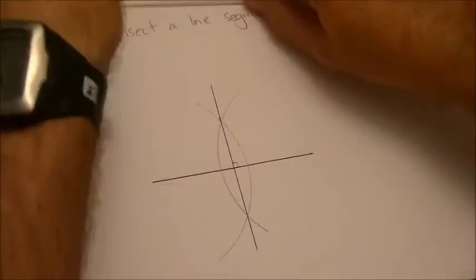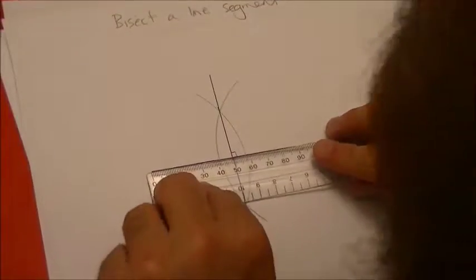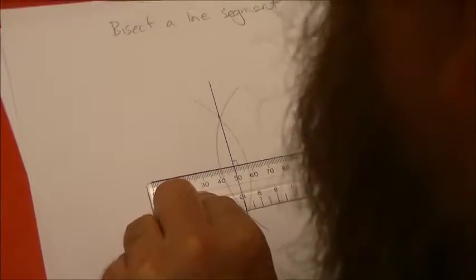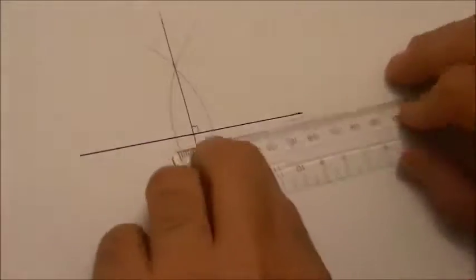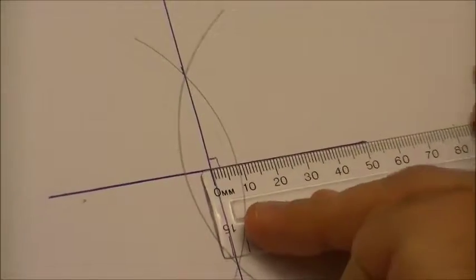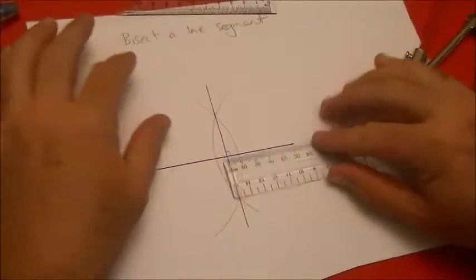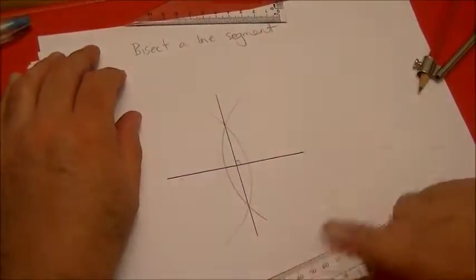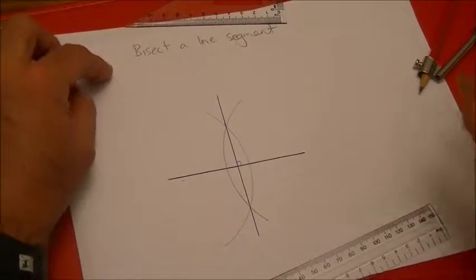Now, the question is, is this really cutting it in half? Let's have a look. So, five centimeters, five centimeters. So there you go. We have bisected the line segment. We've cut it into two equal bits and we've created a right angle up and down. And that's worth remembering because that's a trick we're going to use again.